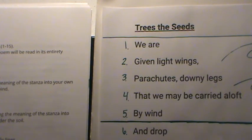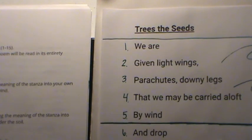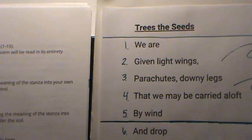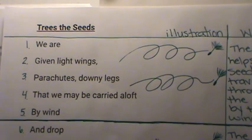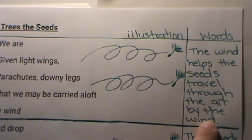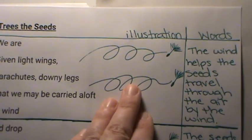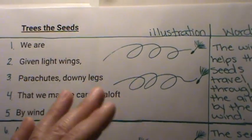We are given light wings, parachutes, downy legs that we may be carried aloft by wind. To me, these five lines are saying this is when the seeds are traveling — by wind, water, or animal — when they are being moved around before they have actually been planted somewhere. I separated this part of my page into an area for an illustration and then my sentence.